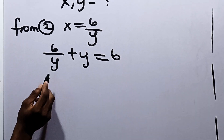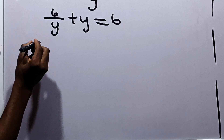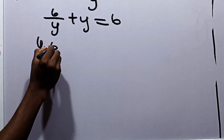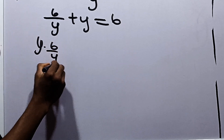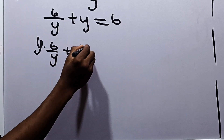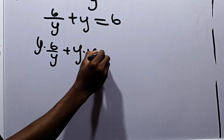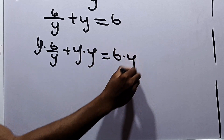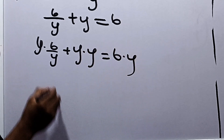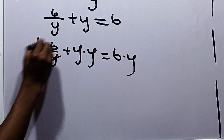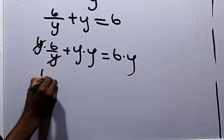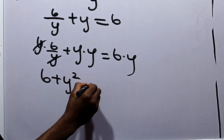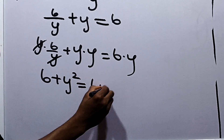Multiplying each term by y, we have y times 6 over y plus y times y is equal to 6 times y. Now, y cancels y so that we have 6 plus y squared equal to 6y.